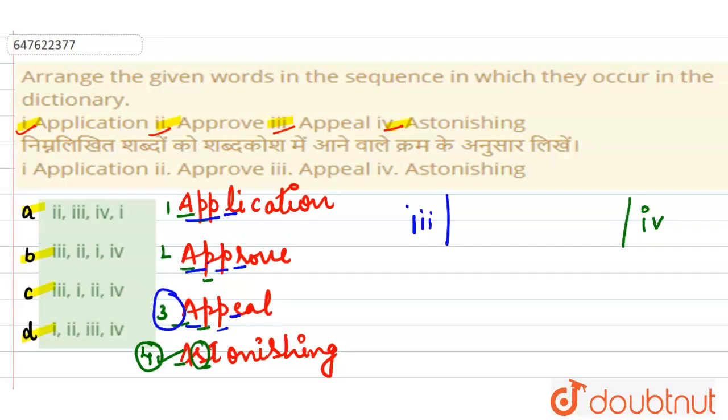Appeal ke baad first or second me dekhna hai. Ab humne dekhna hai ki L pehle aata hai ya R pehle aata hai. Hamare paas L pehle aata hai, yanni ki humare paas sabse pahle aayega first word application, then approve hoga. Humare paas series ban gai: third, first... sorry, second. Third, first, second and fourth - yanni ki option number C.